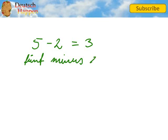Fünf minus zwei ist gleich. So fünf minus zwei ist gleich drei.